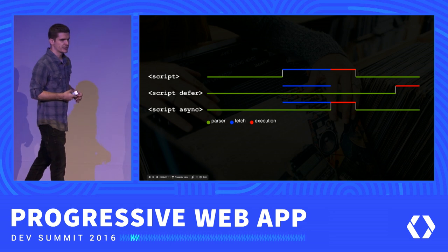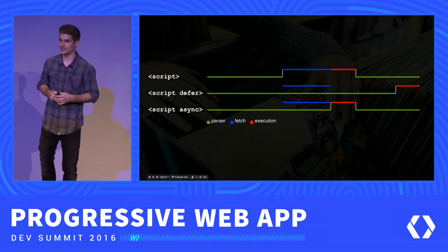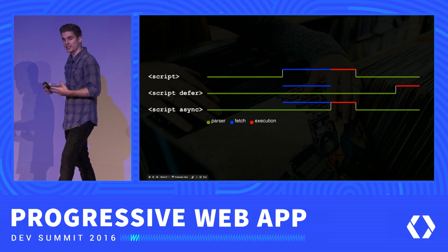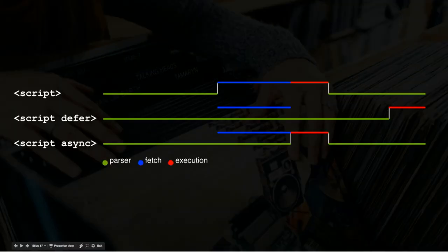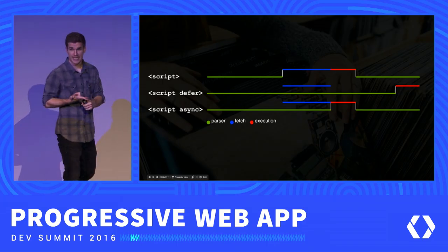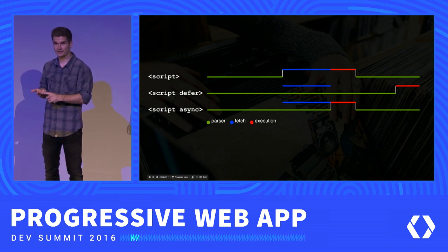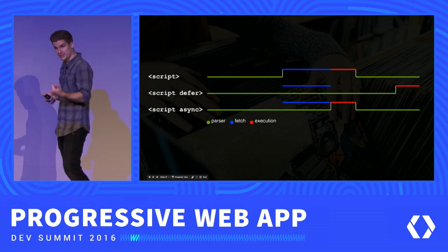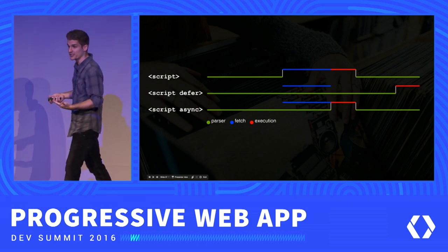One thing you can do very easily to become visual earlier is to delay your JavaScript until the HTML has been parsed. By default, without any attributes, a script tag is blocking. When the HTML parser encounters a script tag, it will pause until that script has been executed. If that script is external, the parser pauses, opens a new connection, possibly does a TLS handshake, requests the file, downloads the file, parses it, executes it — and only then can the HTML parser finally continue. This will delay your render quite significantly.